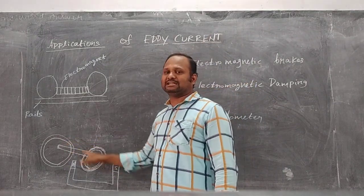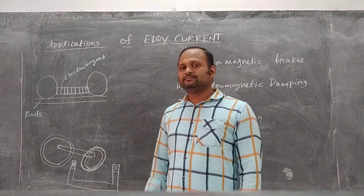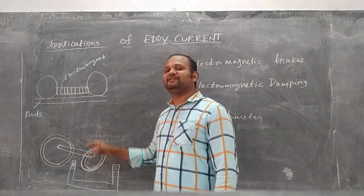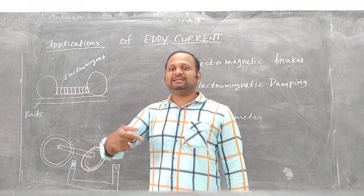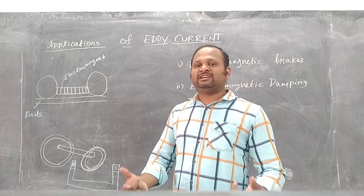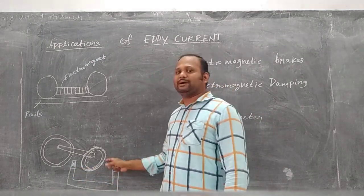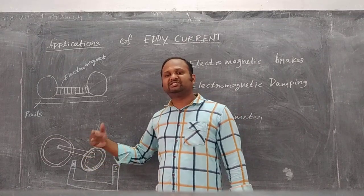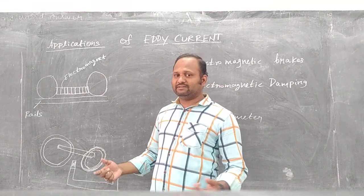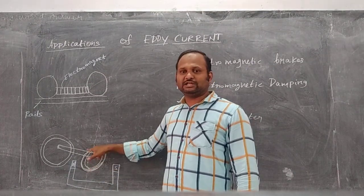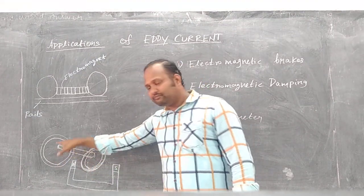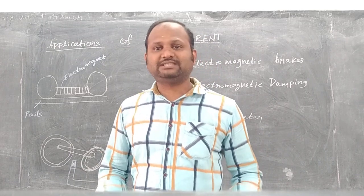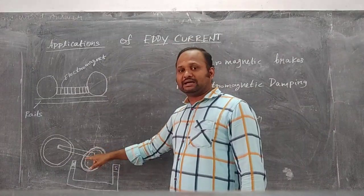In electromagnetic circular brake, the wheel of the train is connected to a circular metal disc with the help of a shaft. When the wheels of the train rotate, the shaft rotates, so the metal disc also rotates. When the brakes are applied, a magnet provides a magnetic field around the rotating disc. So eddy currents are produced in the disc because of the varying magnetic flux, which opposes the motion of the disc. Since the disc is connected to the wheel of the train, it opposes the motion of the wheel, and the train immediately comes to rest. This is called electromagnetic circular brake.